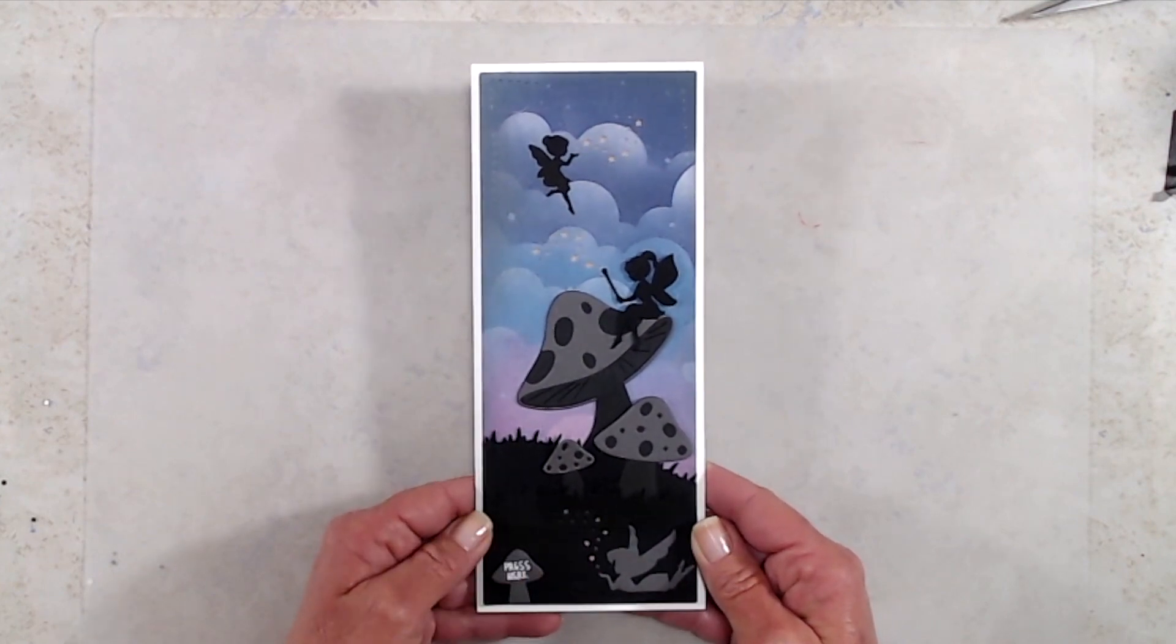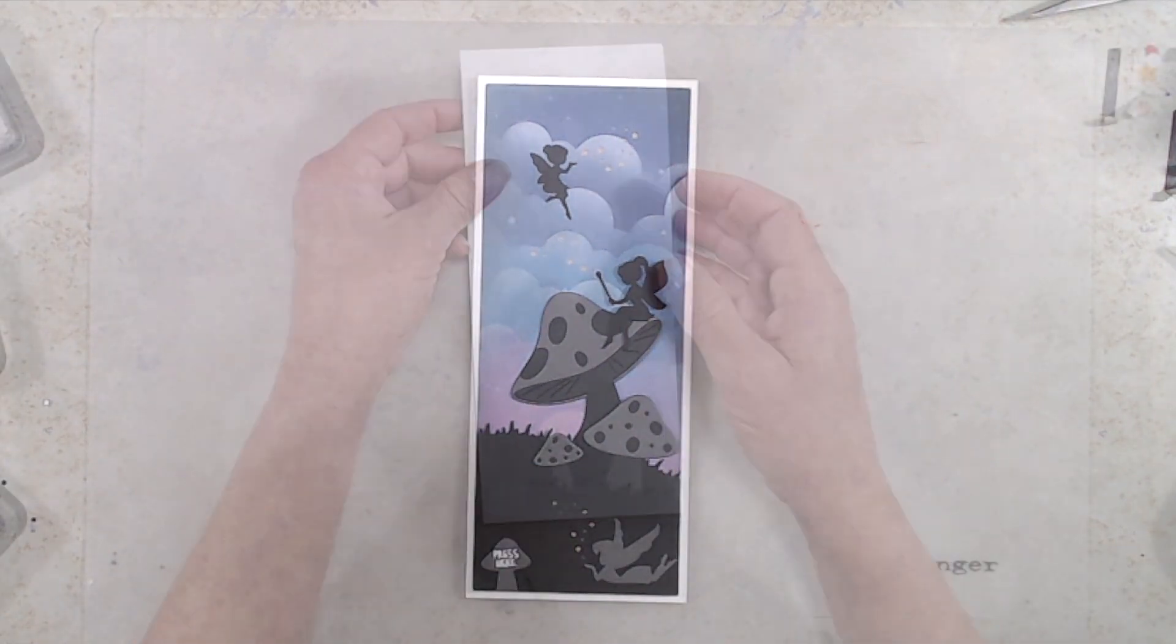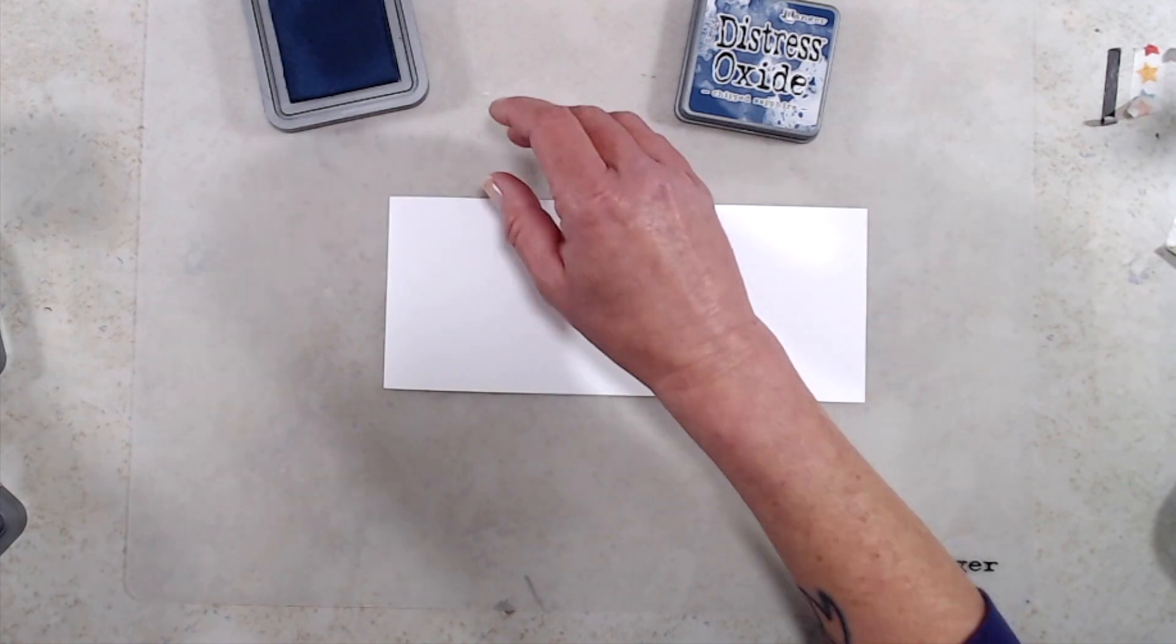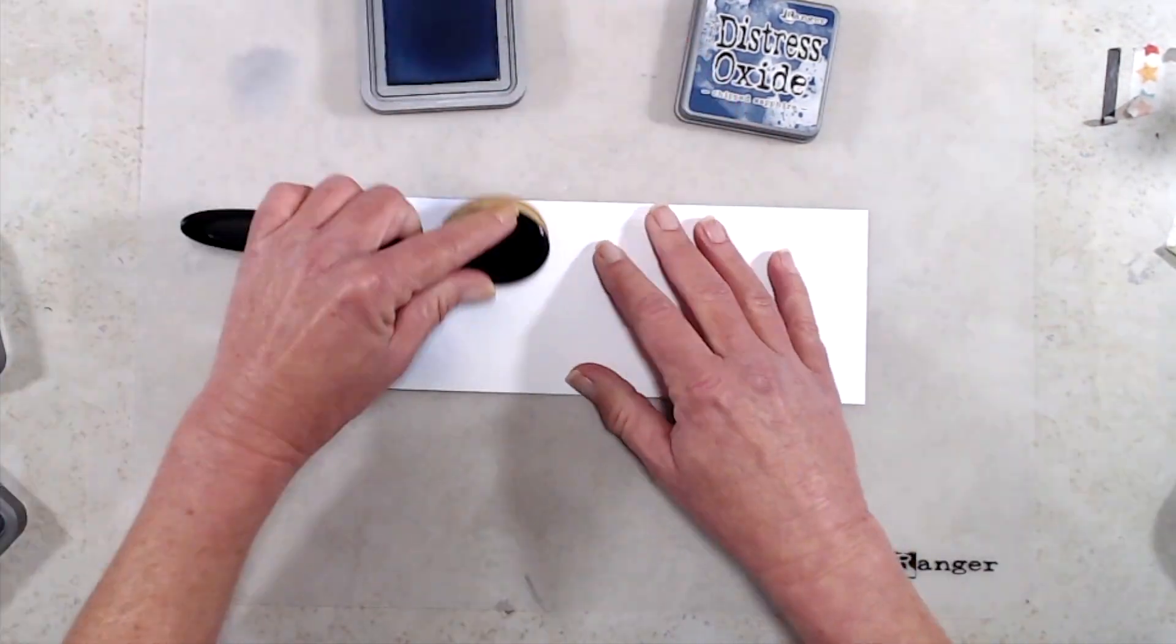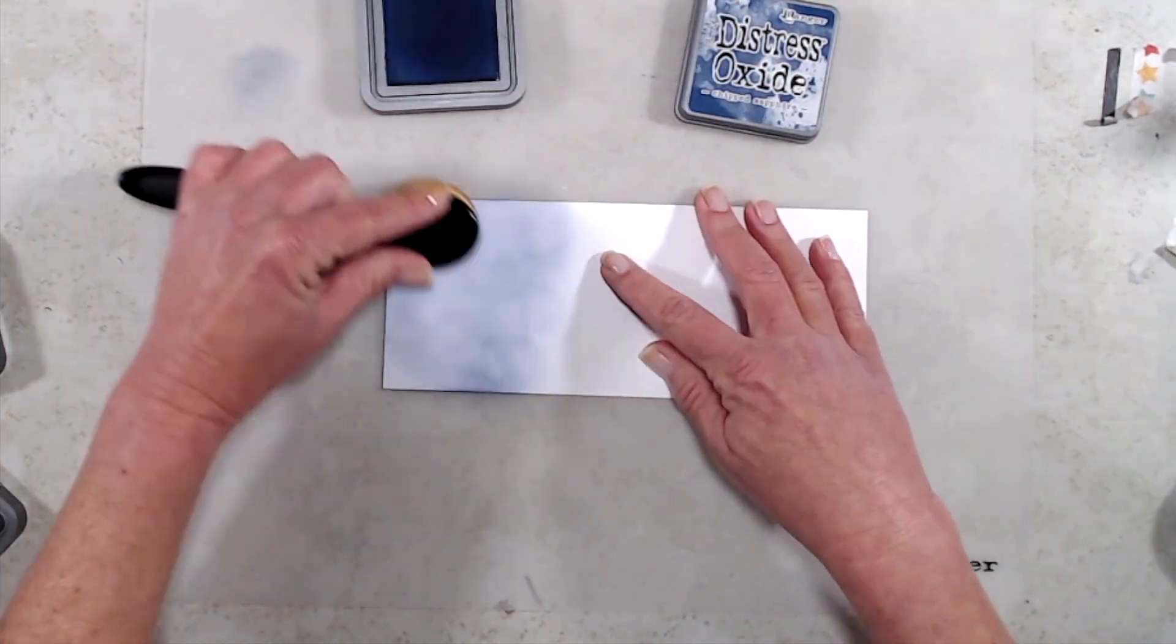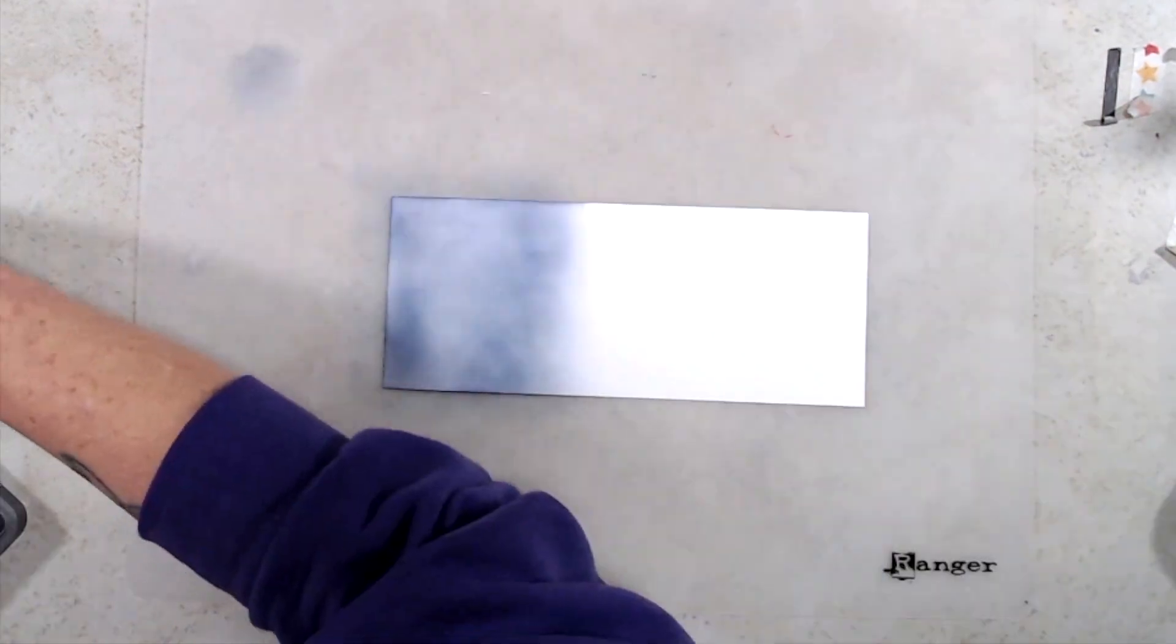So jumping right in, I started out with a piece of Neenah Classic Crest cardstock that's cut to eight and a half by three and a half, and I just did some ink blending with some Distress Oxide inks. I started out with Chipped Sapphire.